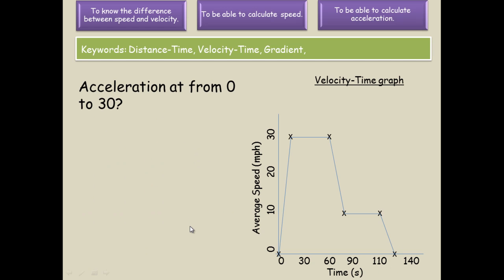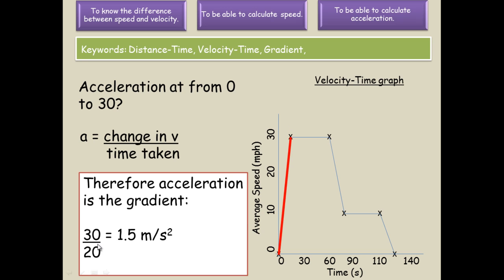If we look at the acceleration from 0 to 30, we can calculate the acceleration. The acceleration is the change in velocity divided by the time taken. It is going from 0 to 30, so the change in velocity is 30. The time taken was 20 seconds. So it is 30 over 20, giving you an acceleration of 1.5 meters per second per second, m/s².